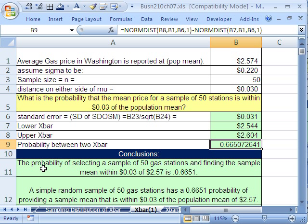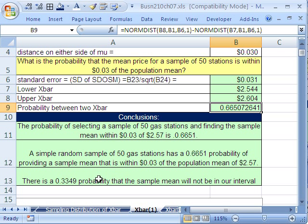So there's our probability. Our conclusion? The probability of selecting a sample of 50 gas stations and finding the sample mean is within 3 cents of 2.57 is 0.6651. Some other ways to say this: a simple random sample of 50 gas stations has a 0.6651 probability of providing a sample mean that is within 3 cents of the population 2.57.